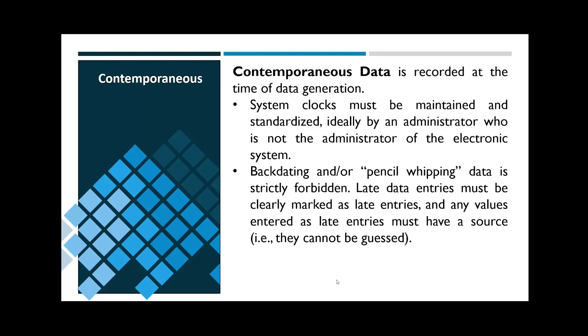Contemporaneous data is recorded at the time of data generation — that means no backdating data, no pencil-whipping. Late data entries must be clearly marked as late entries, and the values entered must have a solid source, such as historization. No guessing or assuming. Another requirement for contemporaneous data that's often overlooked: your system clocks need to be maintained and standardized, ideally by an admin who isn't the admin of the system currently in use. That extra degree of separation is just another level of protection.